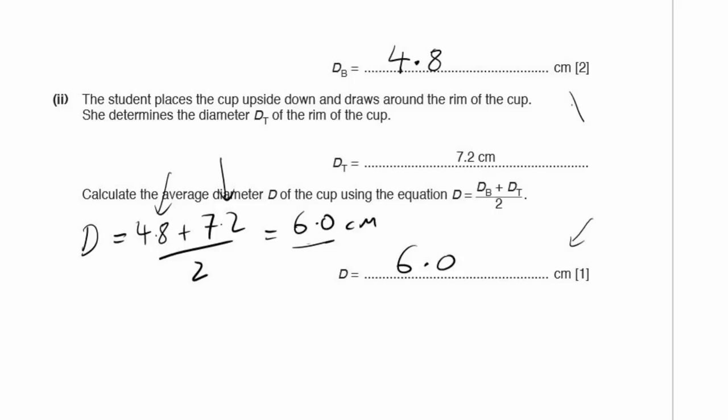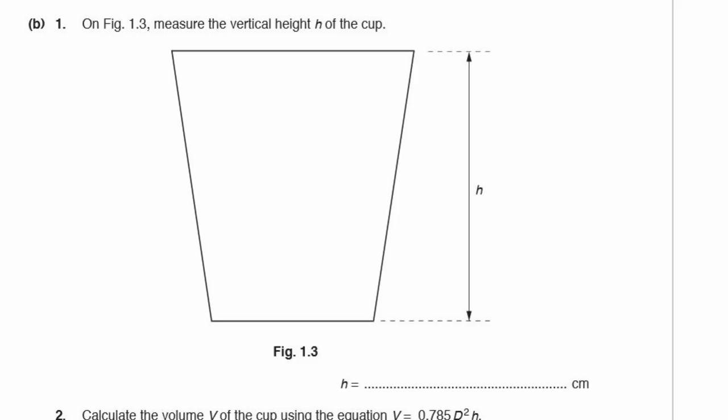Always check to make sure that the units are actually already written in. If they're not, you have to write them in. B, on figure 1.3 measure the vertical height H of the cup. I measured that, and I get a value of 7.8 cm. Check the units are written down there. That happens to be the measurement in the marks scheme. Don't worry if you get 7.9, 7.7. Your computer or printer may have resized it as it was printed out.